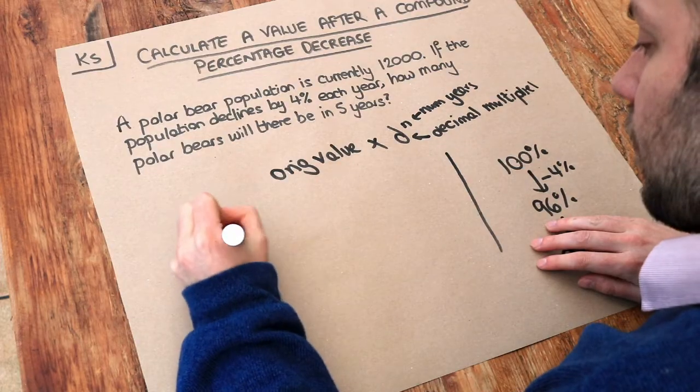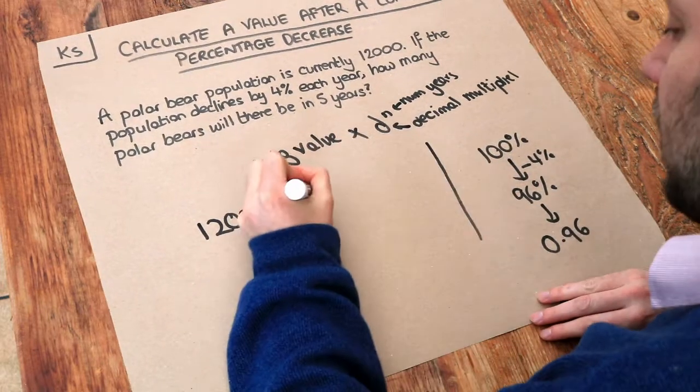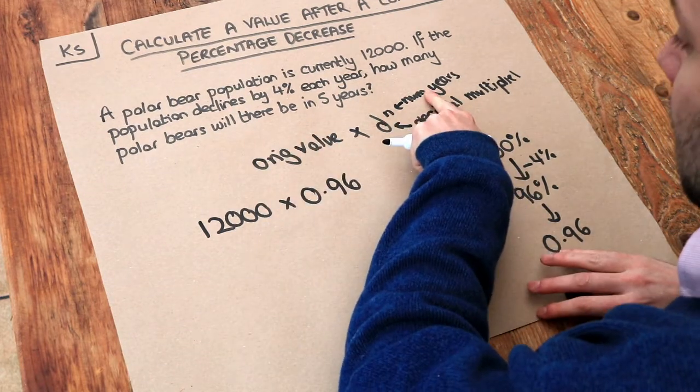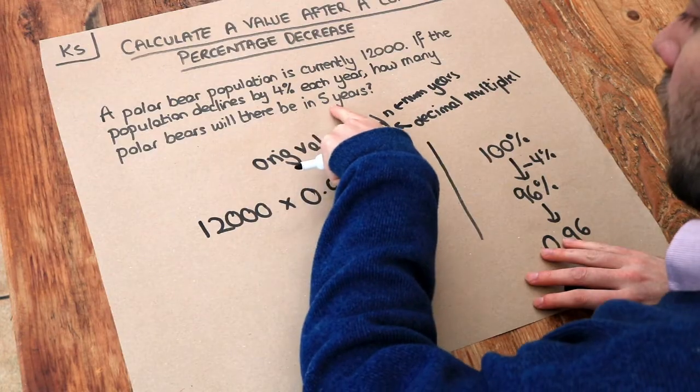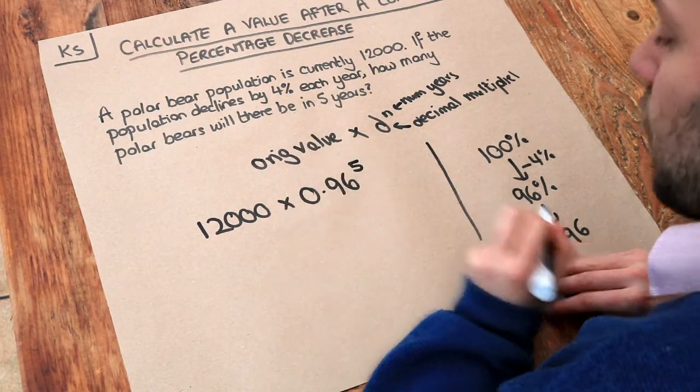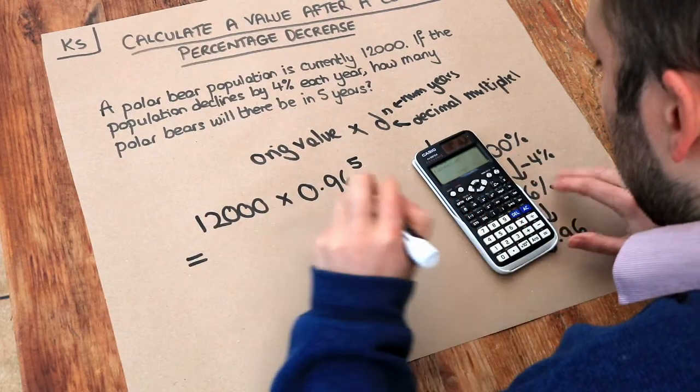So if we have the 12,000 polar bears, the original value, and we multiply by the decimal multiplier, which was 0.96, to the power of how many years or how many months or whatever, so it's five years, we want to apply that 4% decrease five times.